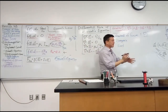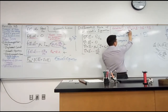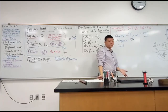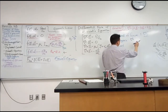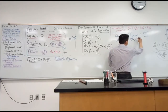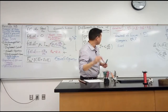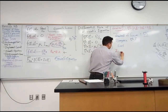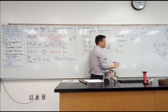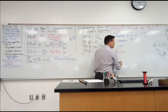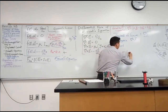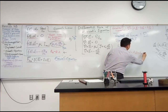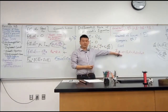A vector field A, for example, is a function of position x, y, z and possibly time. It has an x component, a y component, and a z component. Electric field and magnetic field are examples of vector fields — they are vector quantities that are functions of position with three components.